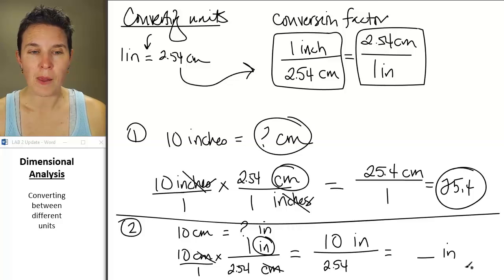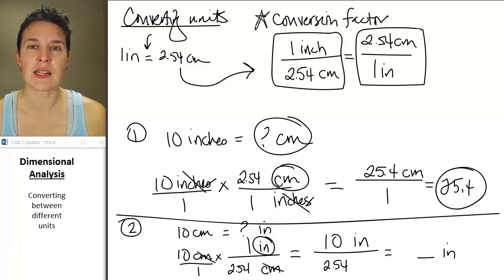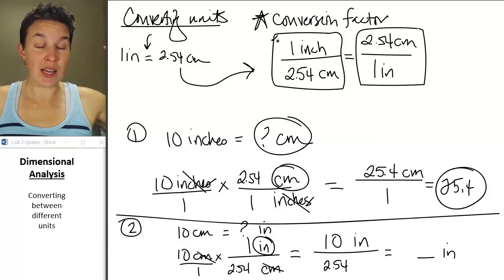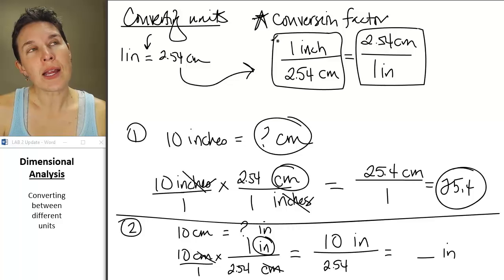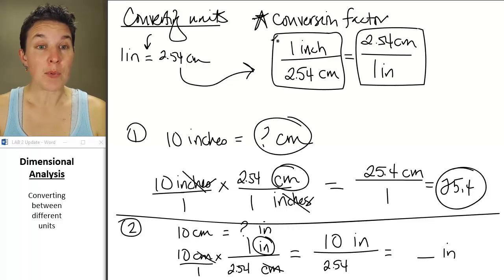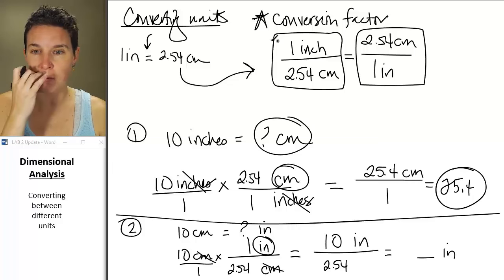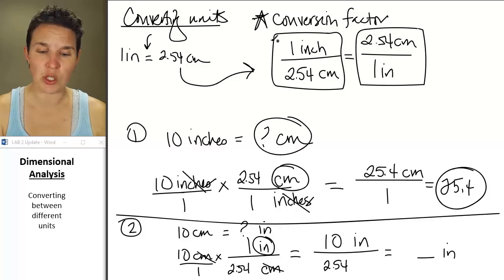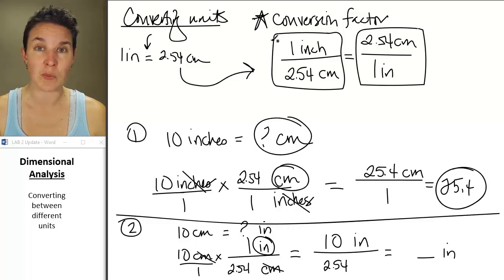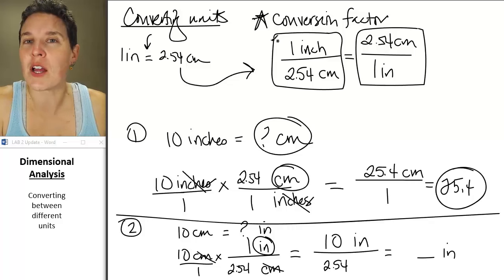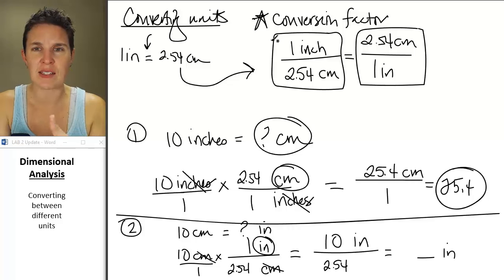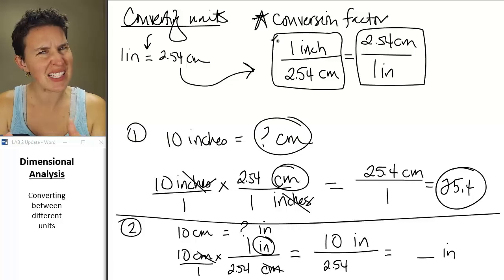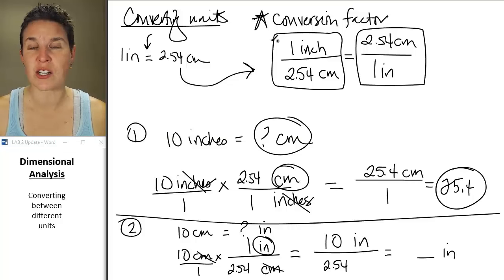The only thing you need to convert between units is conversion factors — that's it. I will always give you the conversion factors you need. If you're in chemistry, all you'll need is a periodic table to convert between grams and moles. It isn't hard — you just have to know what conversion you're actually going to be using.